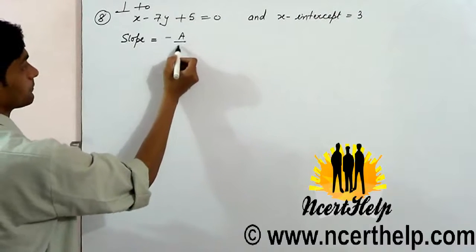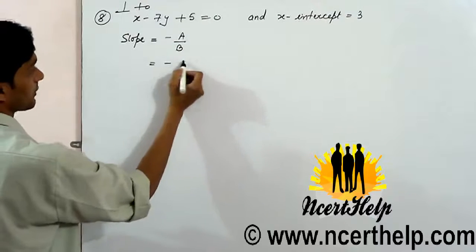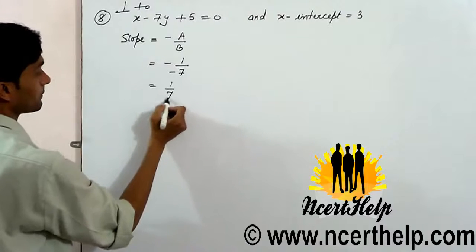The equation is in the form Ax + By + C = 0. Slope equals minus A over B, which is minus 1 over 7. The slope is 1 over 7.